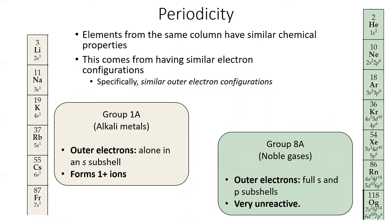On the other end of the table are the noble gases, which have full S and P subshells. This electron configuration makes these elements very stable and unreactive.